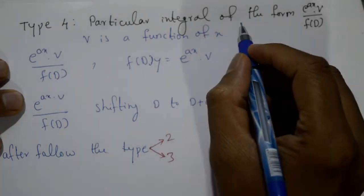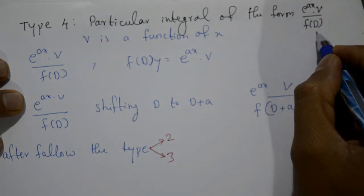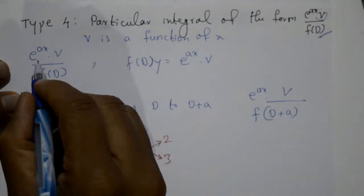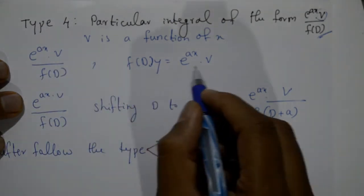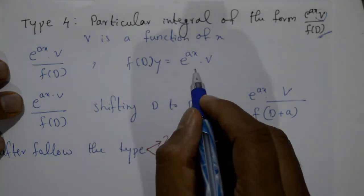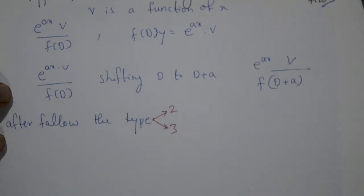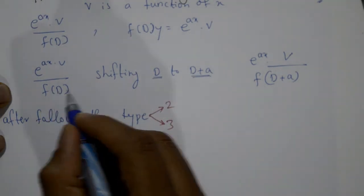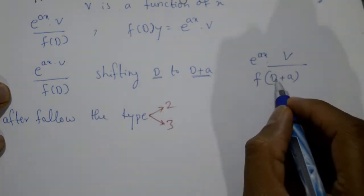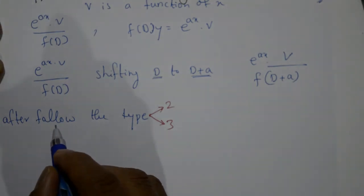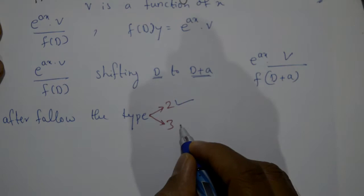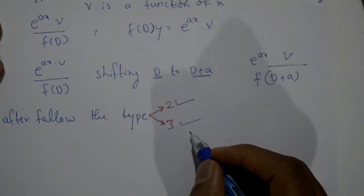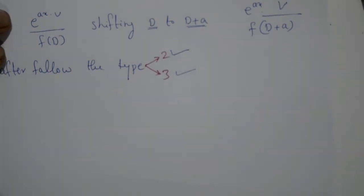Type 4 particular integral is of the form e^(ax) × φ(x) upon f(D), where φ is a function of x. The general equation is f(D)·y = e^(ax)·φ. For Type 4, we shift D to D+a in f(D). After shifting, we follow Type 2 (sin/cos) or Type 3 (polynomial division method) as applicable.